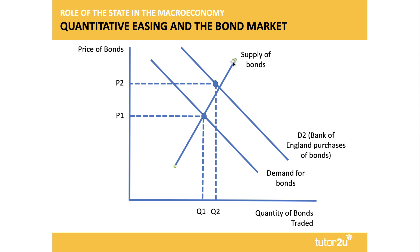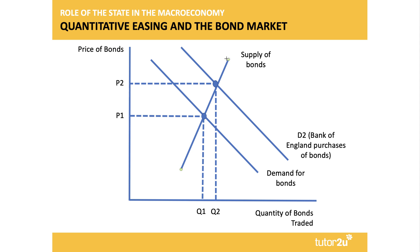Another thought is to use a bond market diagram if you get a question on quantitative easing. In this situation, the Bank of England goes into the market and buys bonds, shifting out the demand for bonds and driving up the price of bonds because there's a greater demand — the Bank of England buying bonds from commercial banks, for example. The price of bonds goes up and the yield on a bond goes down. Nothing wrong with using a bond market supply and demand diagram for a macro question on quantitative easing — very few students will do that.